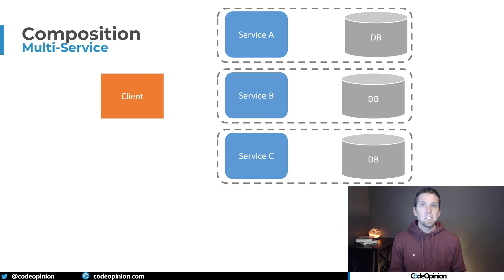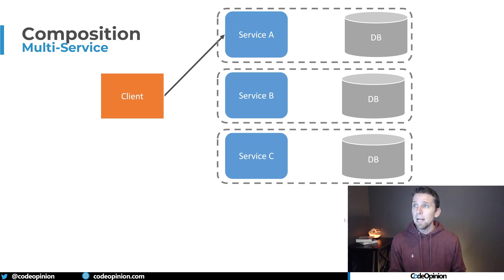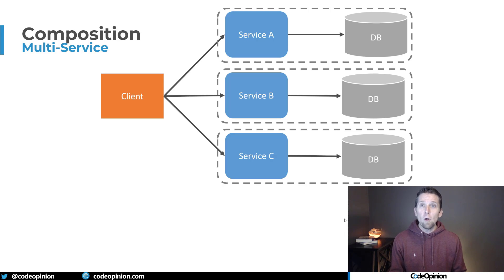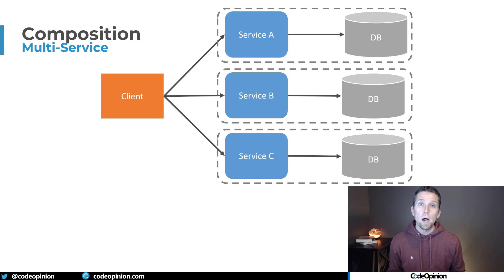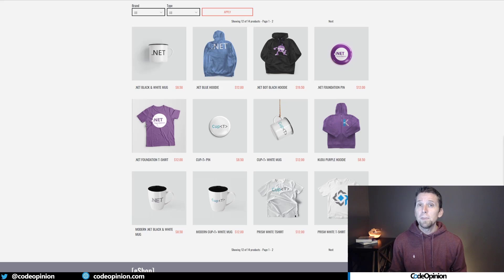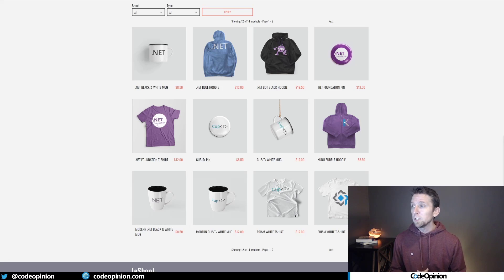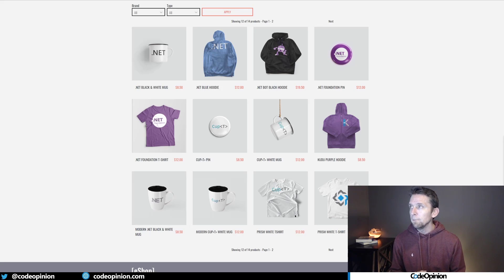we need to fetch that data from multiple different services. If we have a SPA or some client making an HTTP call to an HTTP API, we need to hit all these different services to get all that data and compose it on the client to provide our UI. To illustrate this, I'm showing the eShop on Containers sample application, making up what service boundaries could be in an e-commerce application.